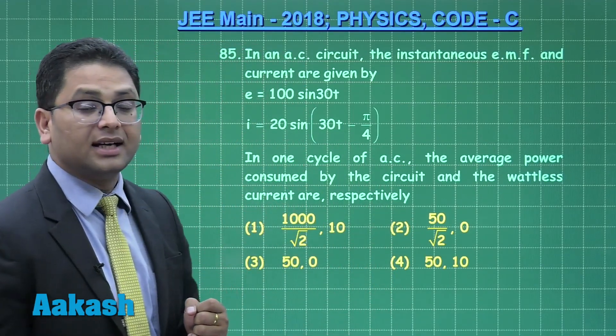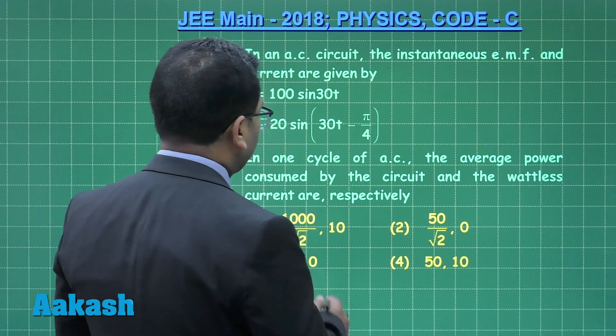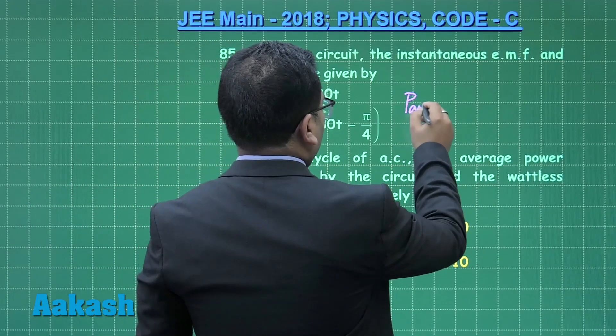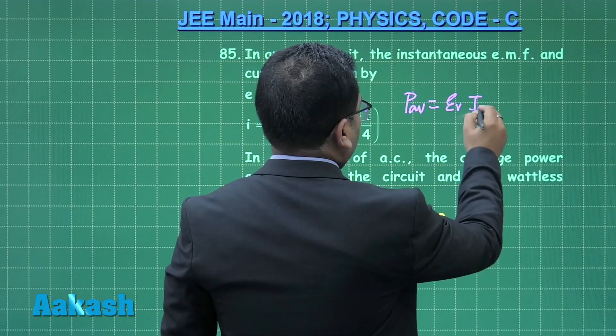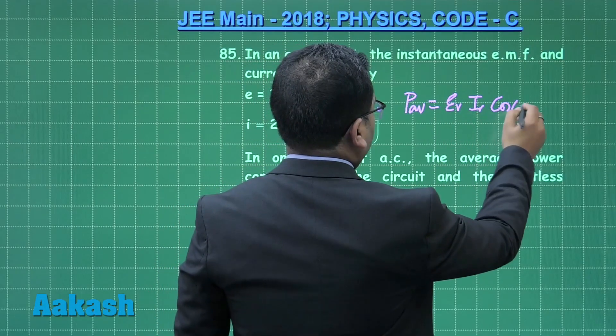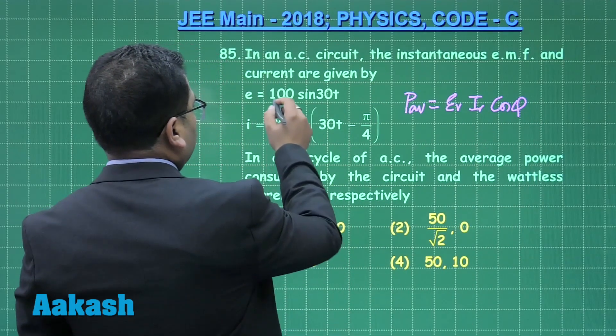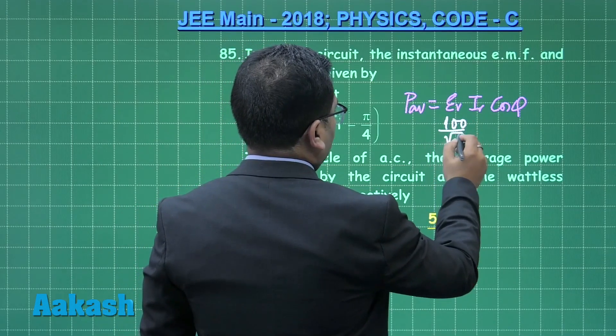So let us just try to see. If I calculate the average power, then the average power we know is E_RMS times I_RMS times cos phi. Now be careful, you need to put the RMS one. Now this is E peak, so E_RMS is going to be 100 by root 2. I_RMS is going to be 20 by root 2.